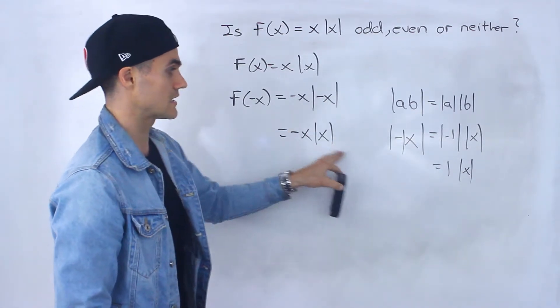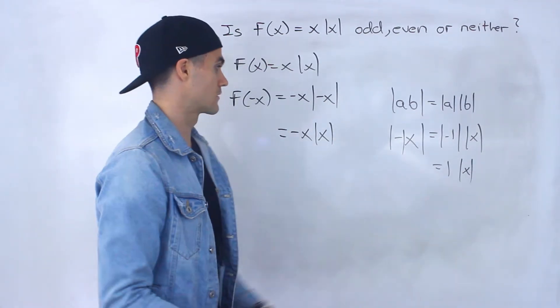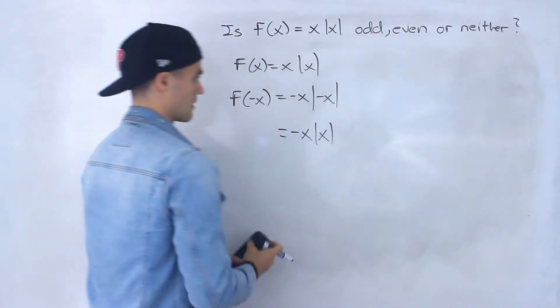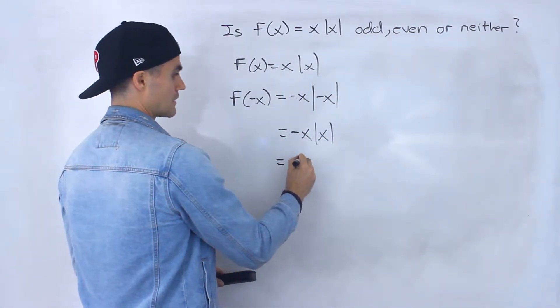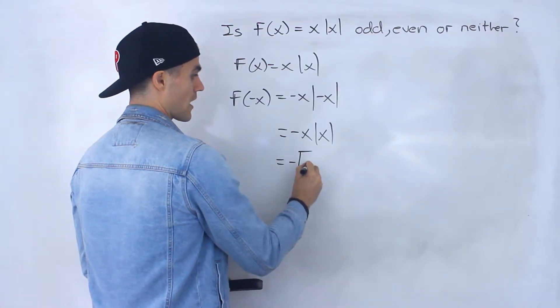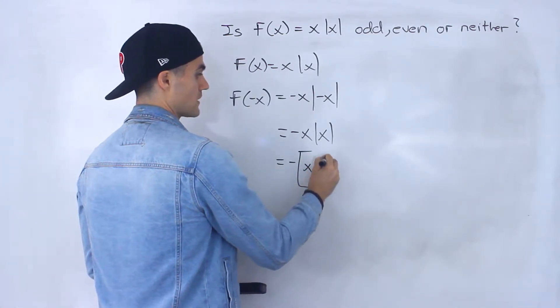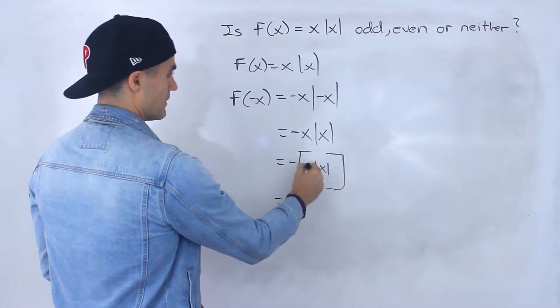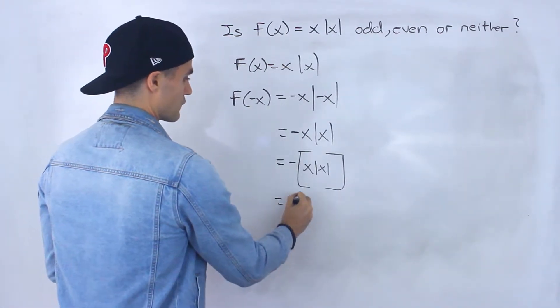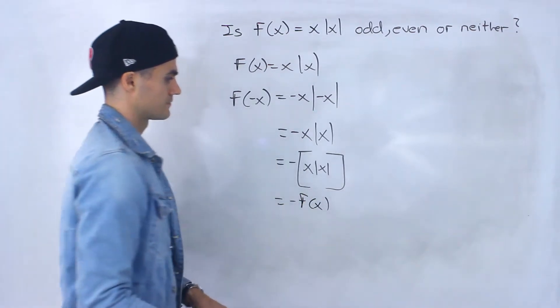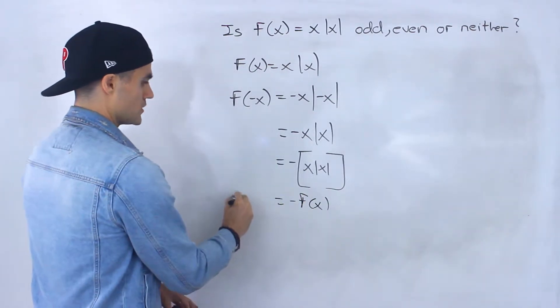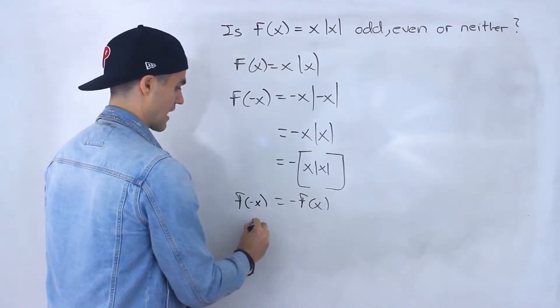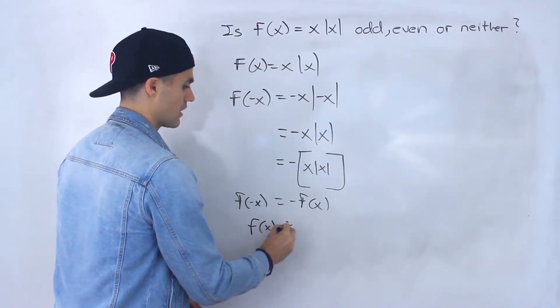Right, so this is gonna equal that. And so notice that we can rewrite this as negative in square brackets x absolute value x. Just took that negative and put it on the outside. And then this is just equal to f of x. So we just proved that f of negative x equals negative f of x which means f of x is odd.